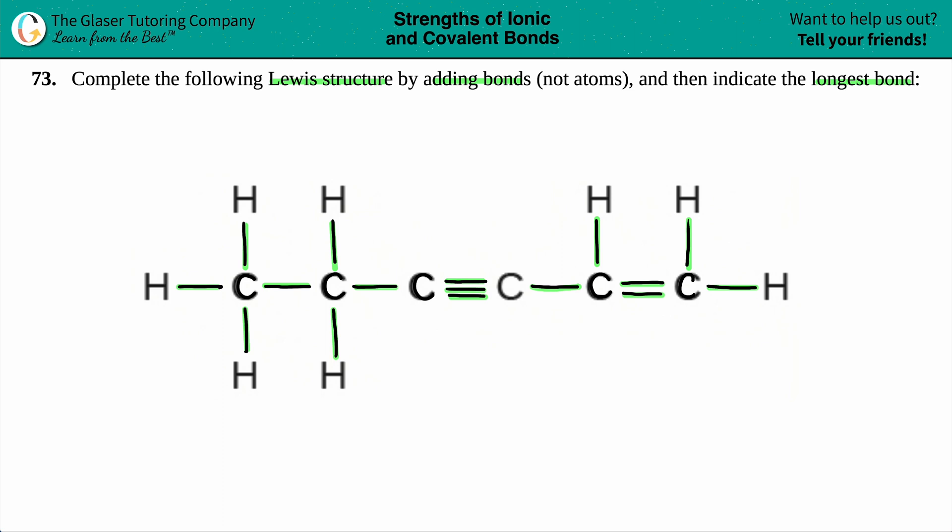We drew the Lewis structure, now we have to figure out which one is the longest bond. This comes down to single bond versus double bond versus triple bond. As you're adding bonds, you're creating more energy, making it harder to break that bond. A C≡C triple bond has three bonds to break, but a single bond only needs one. The triple bonds are always the strongest bonds.